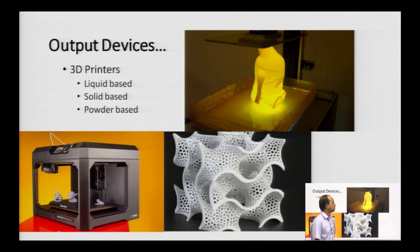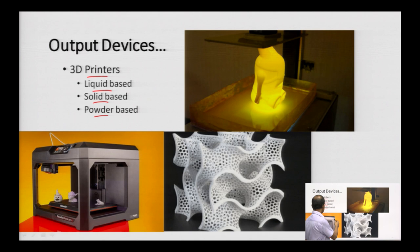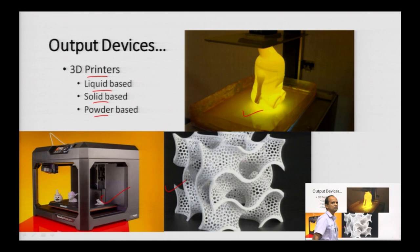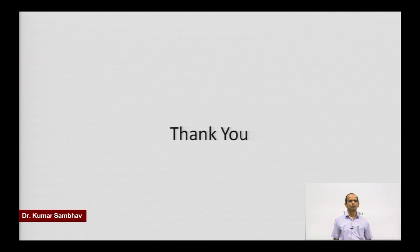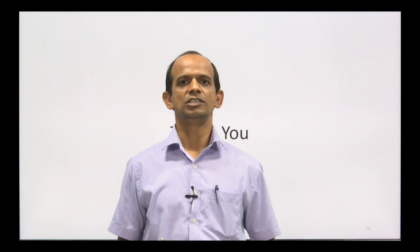3D printers come in three kinds: liquid-based, solid-based, and powder-based. These allow complicated shapes to be made. We will talk about them in more detail later. This was to give a brief overview of the various things involved in inputting and outputting data in computer graphics systems. Thank you all.